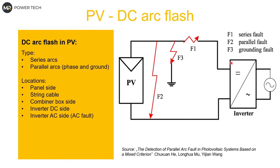For DC arc flash in a PV system, looking at the connection between the inverter and PV panels or strings, you can create a few arc types. One is a series fault arc on the same conductor. Another is a parallel fault arc — for example to ground, which would be a grounding fault. You can also create an arc between two phases. In practice it is very hard to detect a series fault, and because of the nature of PV systems with very low fault current, parallel faults are also hard to detect.